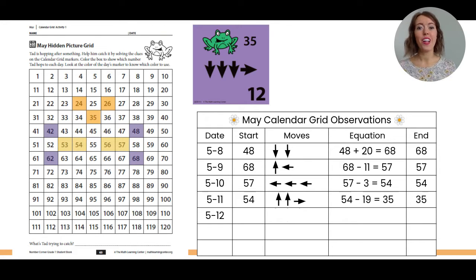Today is May 12th. Last time we landed on number 35, so that's where we're going to start today. Our calendar card says that we're going to go down, down, down, and then to the right.